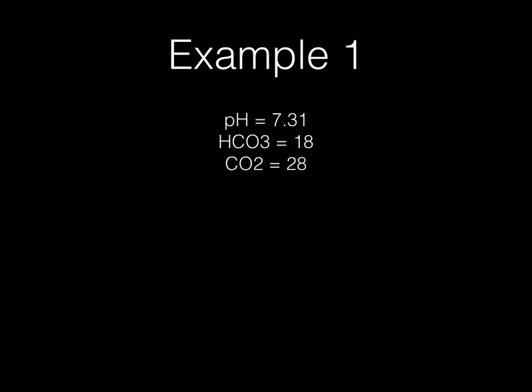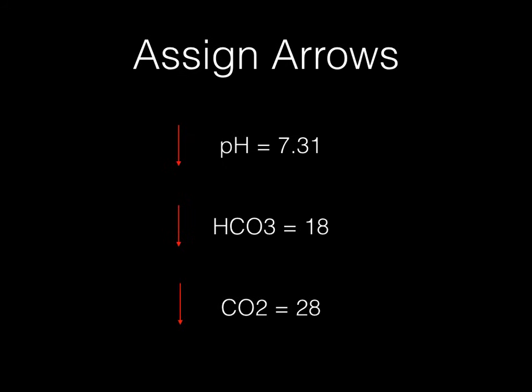Here's example one. You're given a patient and these are his values: he has a pH of 7.31, a bicarbonate of 18, and a carbon dioxide of 28. The first step is to assign arrows. Given that we know the normal values for each of these three variables, we need to decide how this patient's values deviate from normal. His pH is down because normal pH should be 7.40, but his is 7.31 — therefore pH is down.